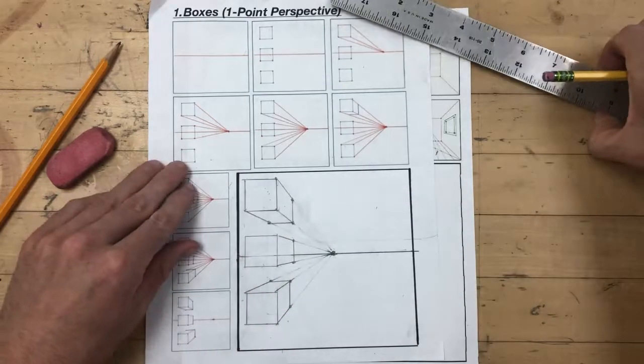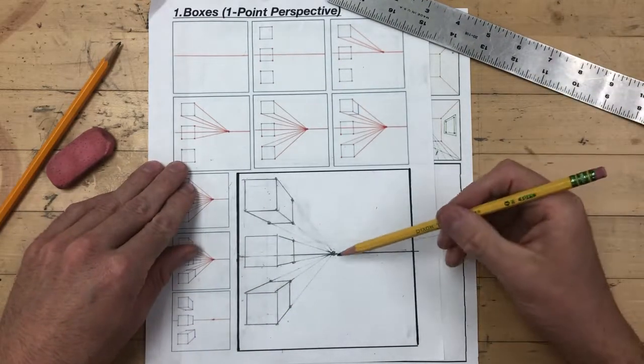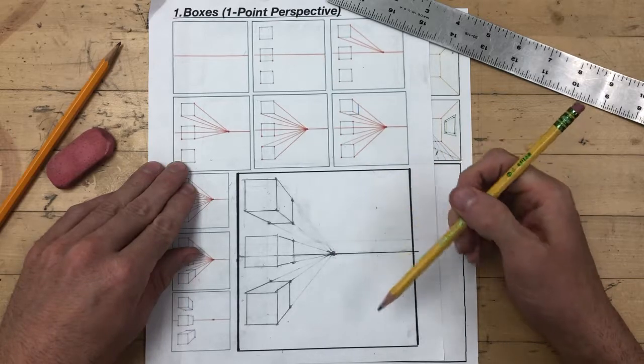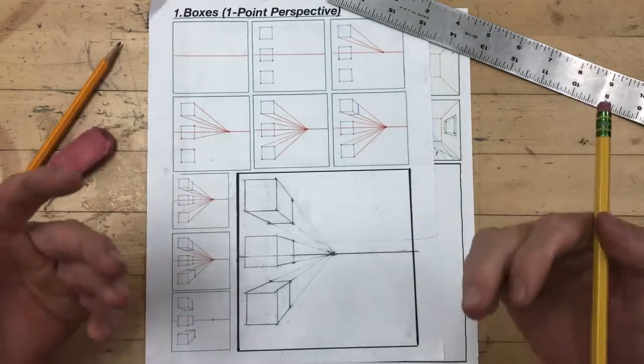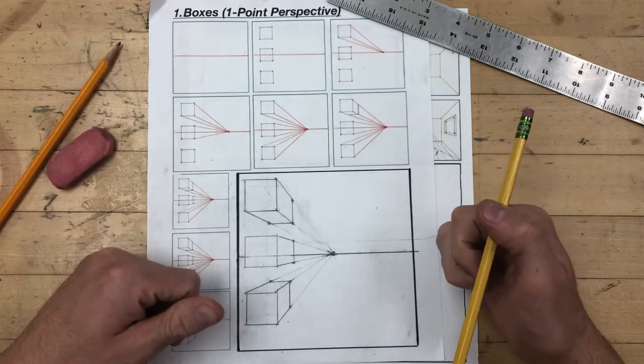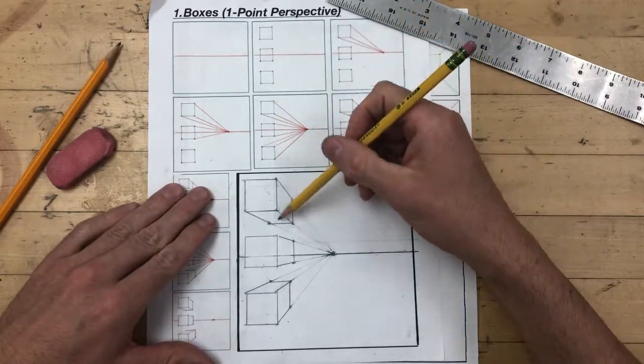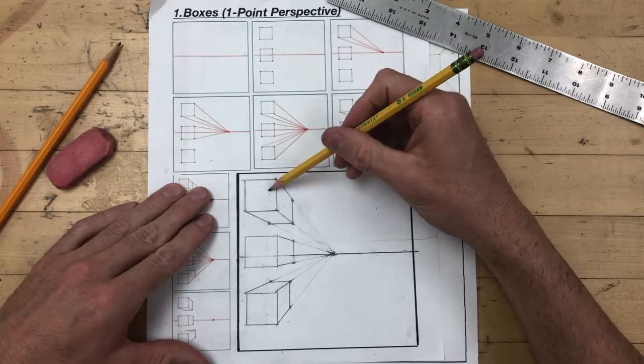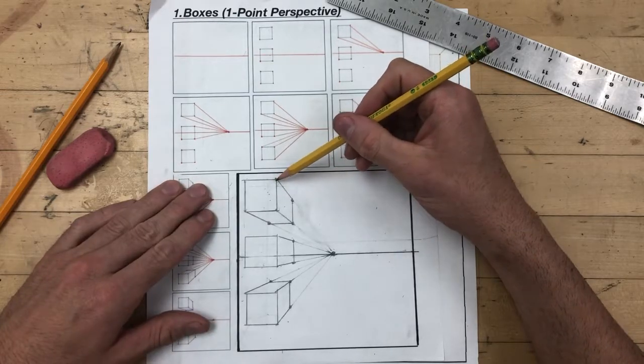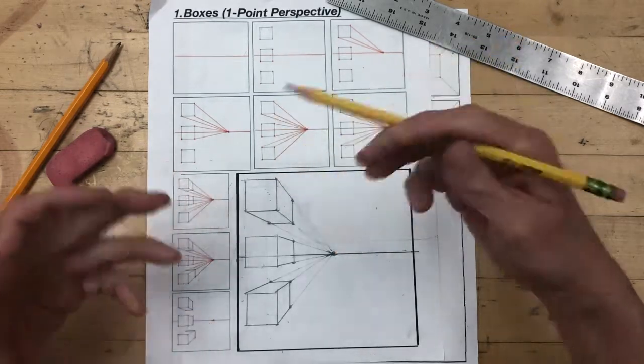We also use the term vanishing point a lot. A vanishing point is where all of your diagonal, or in this case orthogonal lines, converge. Orthogonal lines are lines that give a sense of depth to our basic geometric shapes. In this example, the squares, you would connect the corners of the squares back to your vanishing point using orthogonal lines.